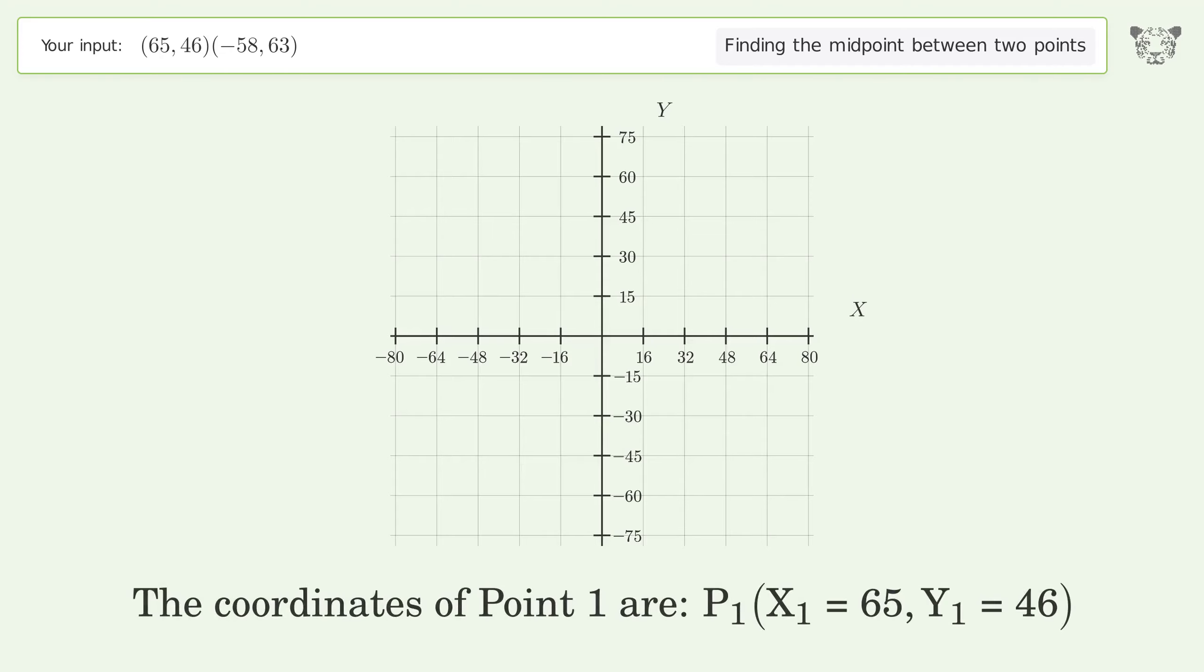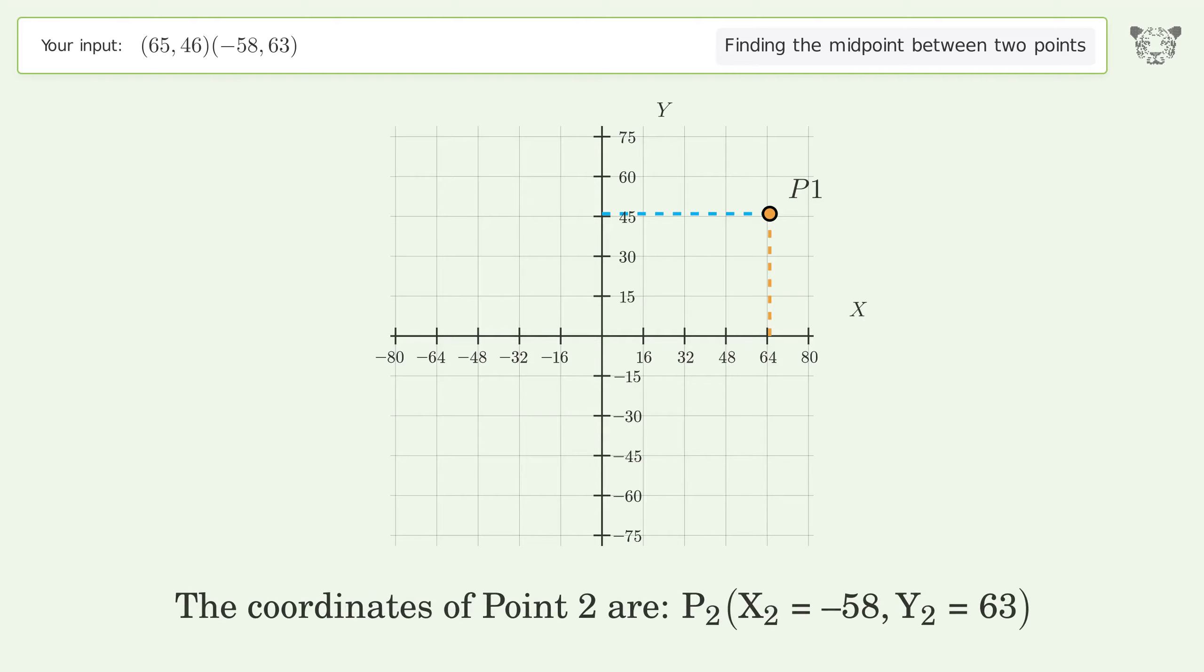The coordinates of point 1 are x1 equals 65, y1 equals 46. The coordinates of point 2 are x2 equals negative 58, y2 equals 63.